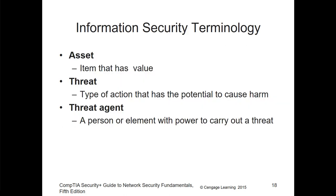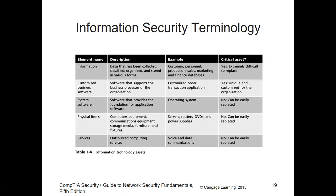Specific terminology we need to understand: assets, threats, and threat agents. An asset is an item that has value. A threat is a type of action that has the potential to cause harm to that asset. A threat agent is a person or element with the power to carry out a threat. Assets include things like software, system software like an operating system, physical items, and services.